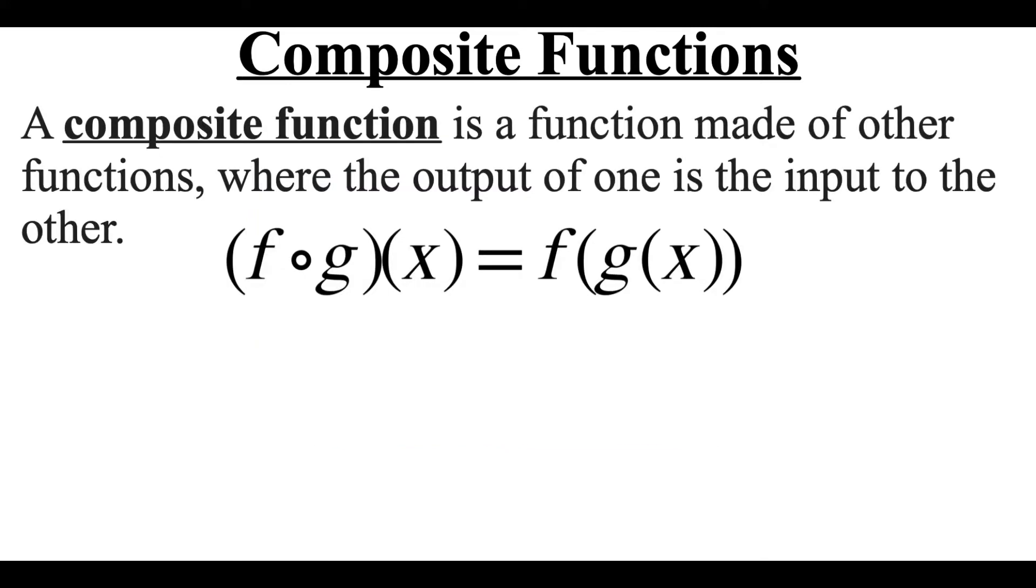A composite function is a function made up of other functions where the output of one function becomes the input to the other. The operational symbol for composition is this circle between the two functions. We would read this as f composed with g of x, or another way to say this would be f of g of x.